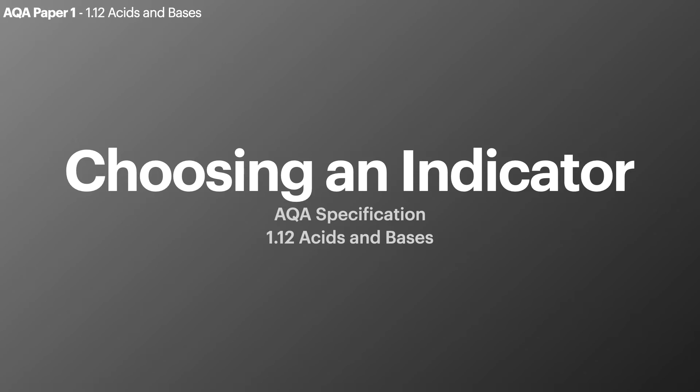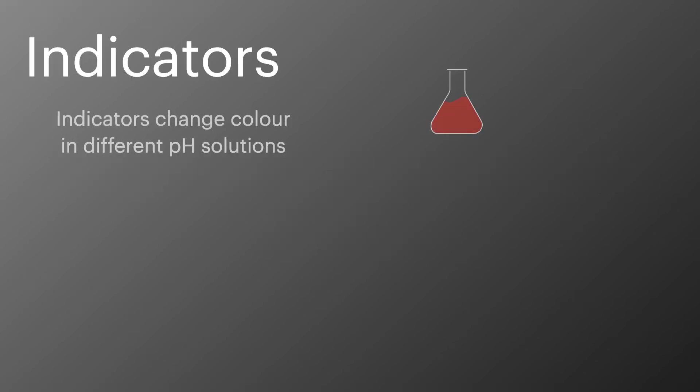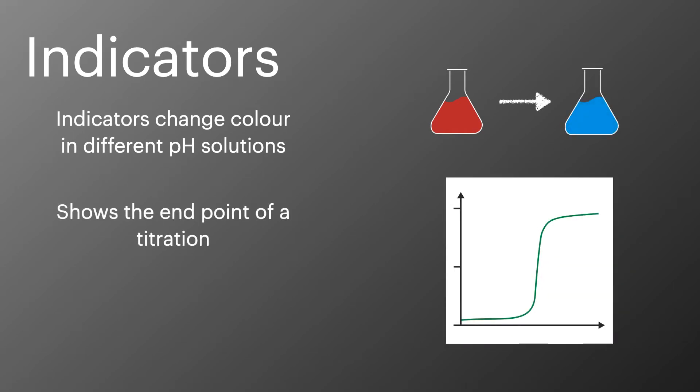If you haven't already consider subscribing to the channel below so you don't miss out on new videos. An indicator is a chemical which changes colour in different pH solutions. They're often used to show when the end point of a titration is reached and if the correct indicator is chosen the end point will be the same as the equivalence point.